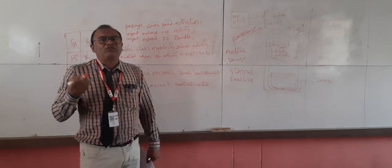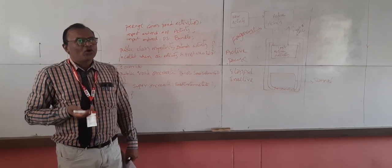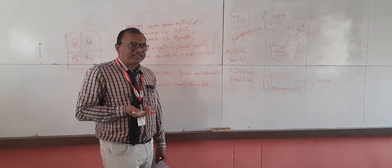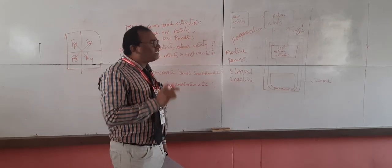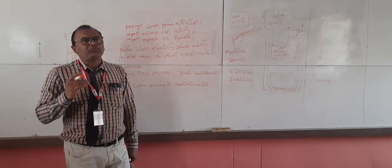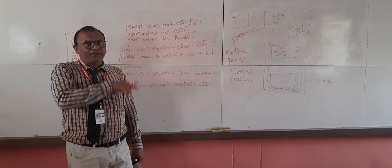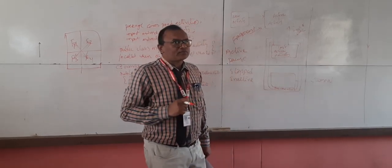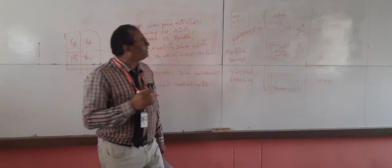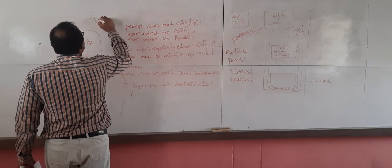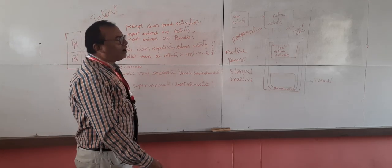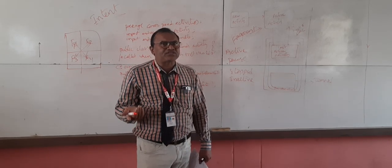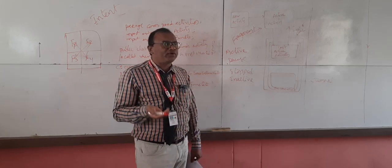If there are more than one activity running in your application or on your mobile — like having more than one application open — you can perform communication between them. This is called inter-process communication, which happens between one activity of an application and another activity of the same or a different application. The method used for this communication is called an intent.